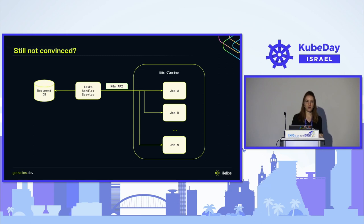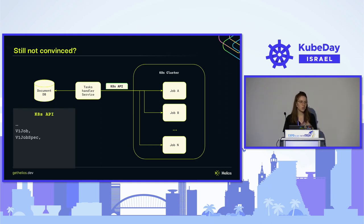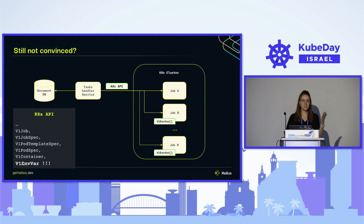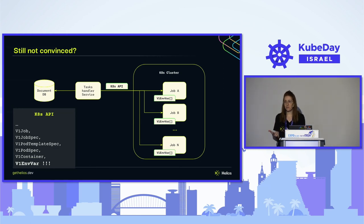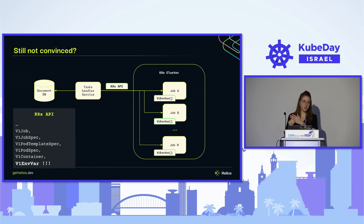We're using a very specific API to communicate with Kubernetes, which has a specific set of objects. We need to think about how to propagate the context there. By scrolling through the Kubernetes API and examining which objects are available when running a task, we find an object called V1EnvVar — environment variables we can define for the task. That would be an amazing solution: inject the context as an environment variable.